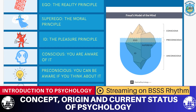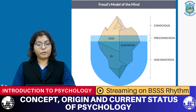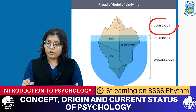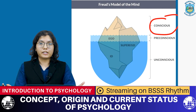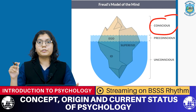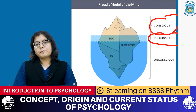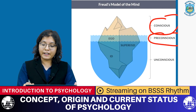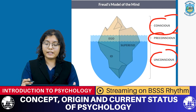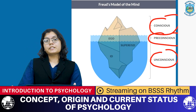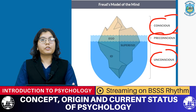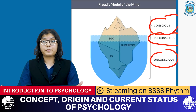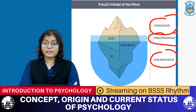Freud proposed a model of the mind divided into three categories. The conscious is where you are aware of what's going on — thoughts, desires, and feelings you have access to. The pre-conscious is something you don't have active access to, but if you think hard enough you'll be able to remember it. Finally, the unconscious — shown beneath the water in the iceberg model — is where you have no access at all. The unconscious consists of childhood memories, traumas, and desires that are too anxiety-ridden to surface.